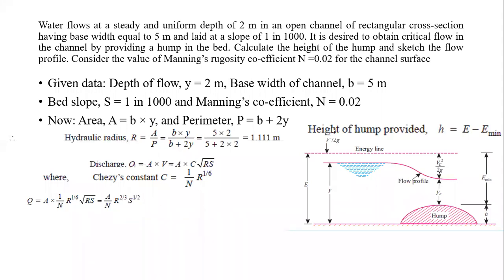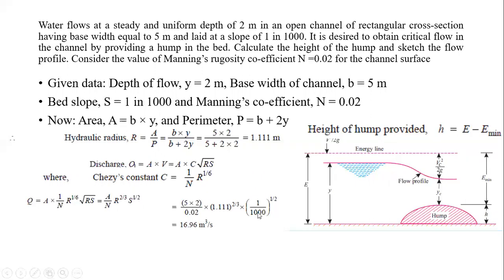Putting the values: area A = 5, Manning's n = 0.002, hydraulic radius R = 1.111 raised to the power 2/3 — since R^(1/2) × R^(1/6) = R^(2/3) — and channel bed slope S = 1/1000 raised to 1/2. We get the total discharge Q = 16.96 m³/s.